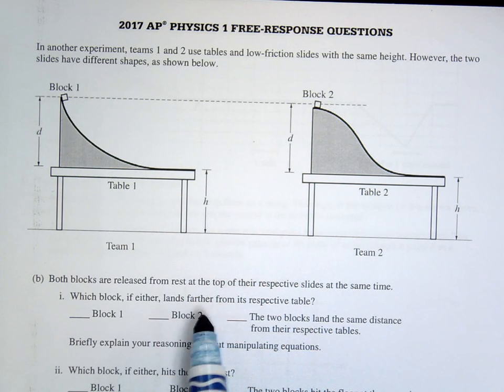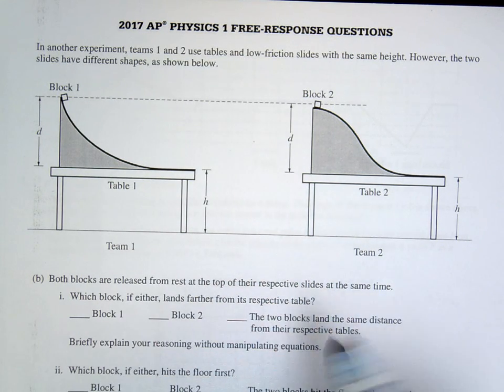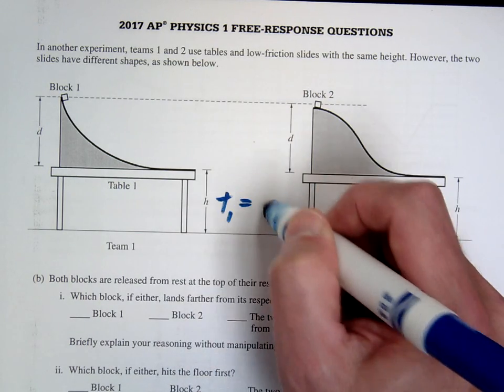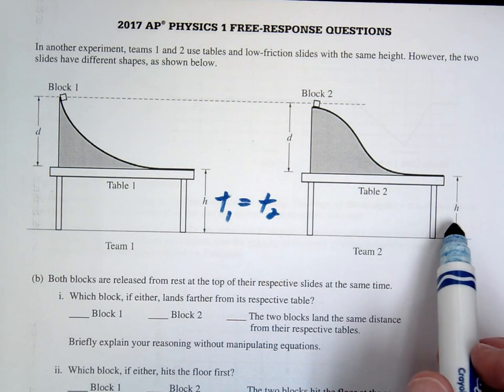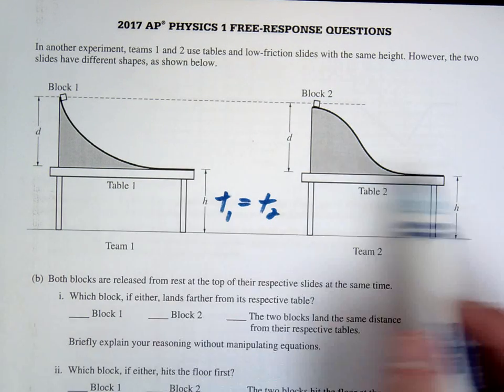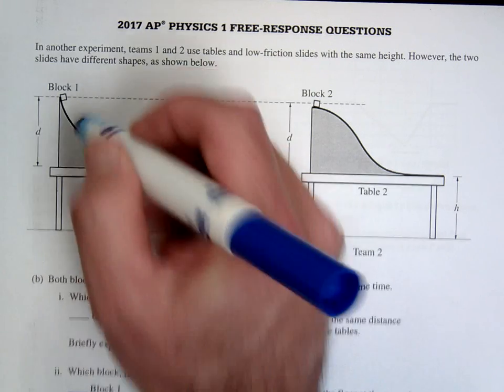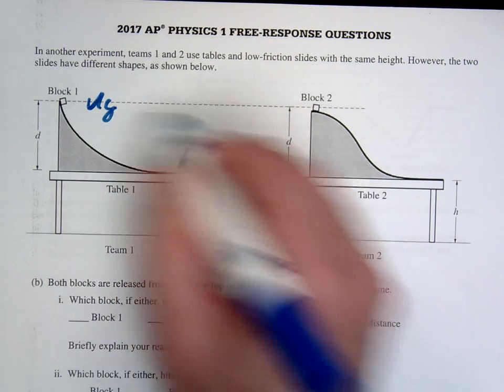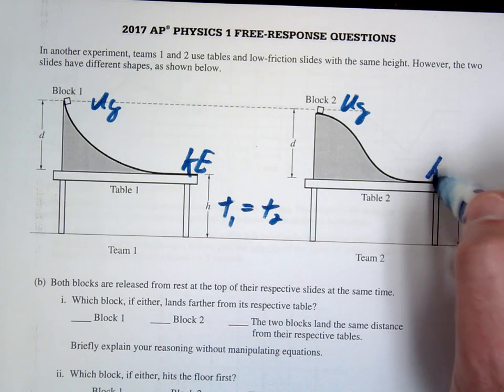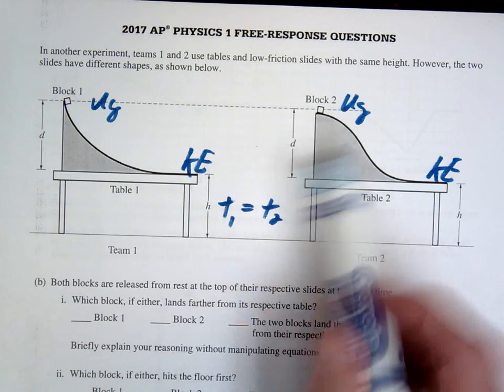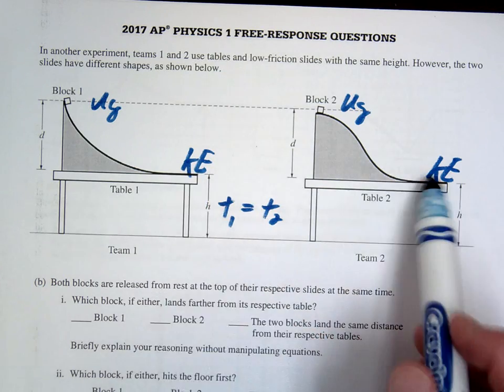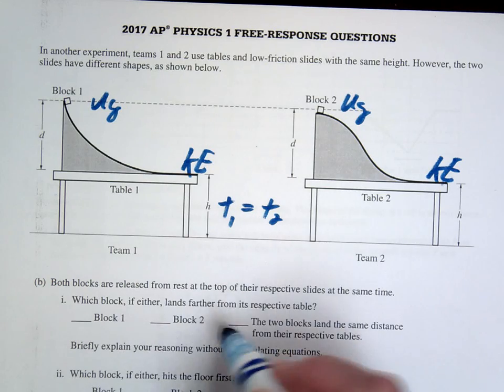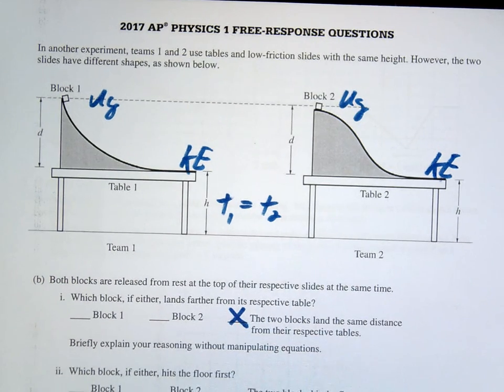The first one is which one's going to land farther from the respective table. Well, again, since the time is the same, time one equals time two, since the heights are the same the time is going to be the same. So again we want to look at the velocities. In this case they both go the same distance, the same height, so this goes from UG to all KE. This one also goes from UG to all KE. Even though they follow different paths, the speed at the bottom is going to be the same. Since the speed is the same and the time is the same, the two blocks will land the same horizontal distance.